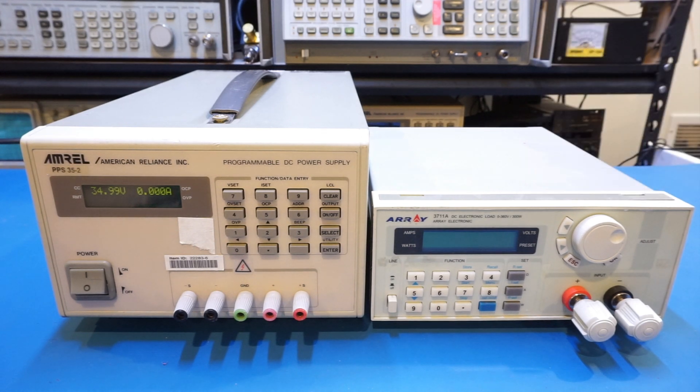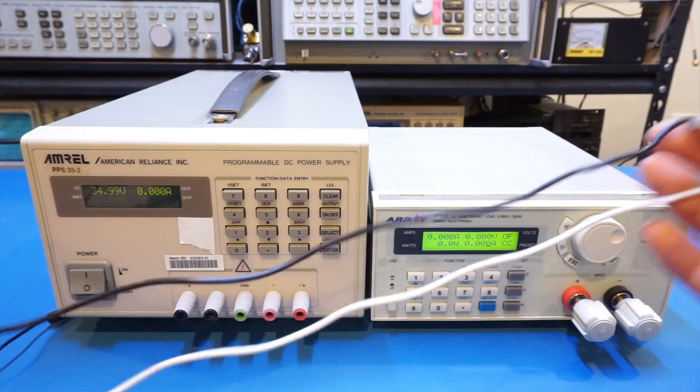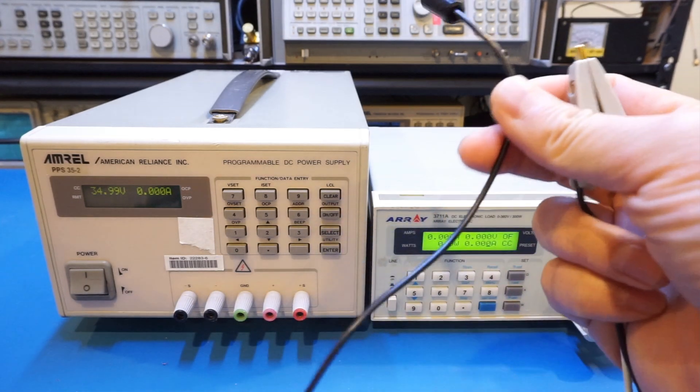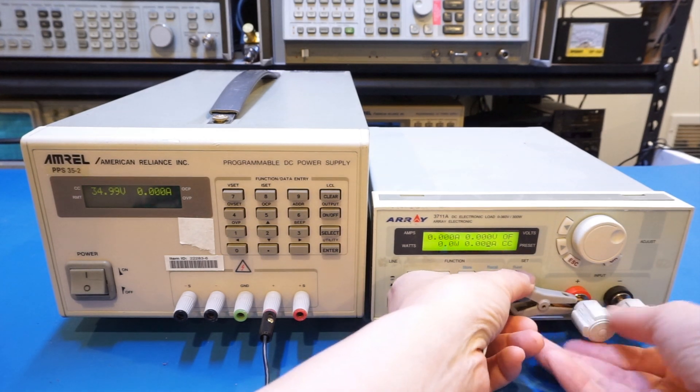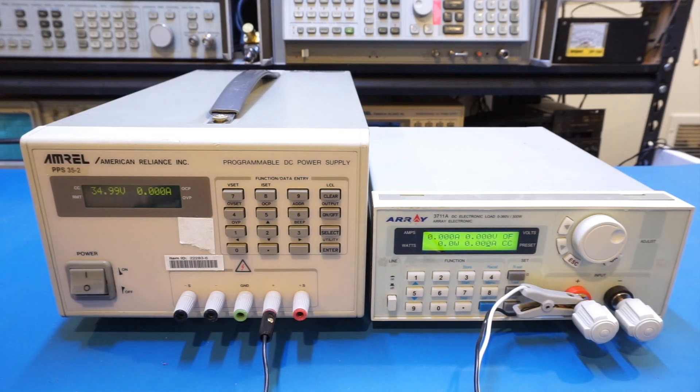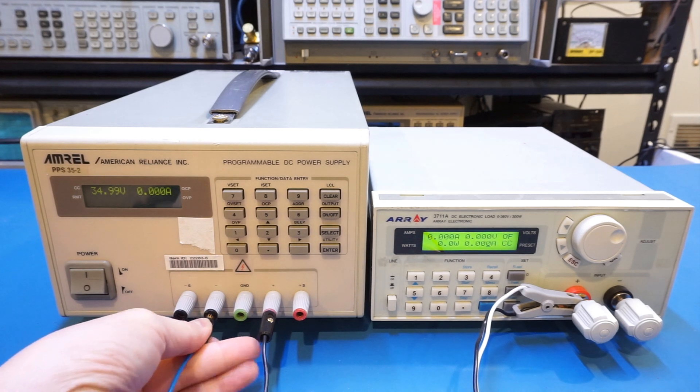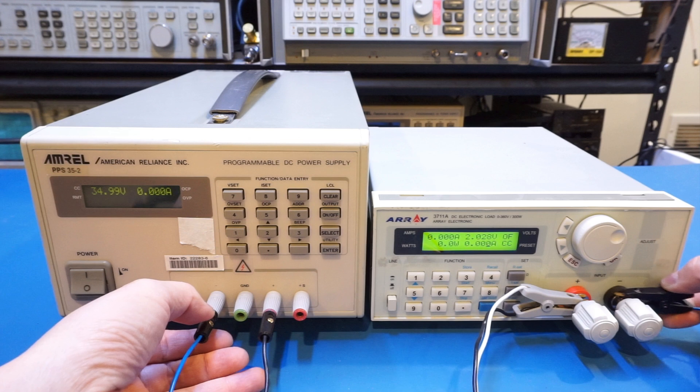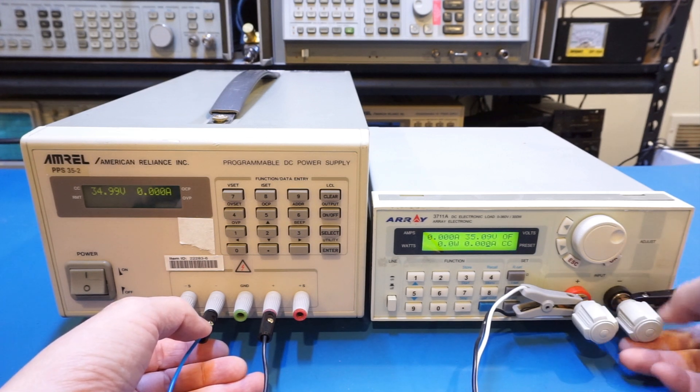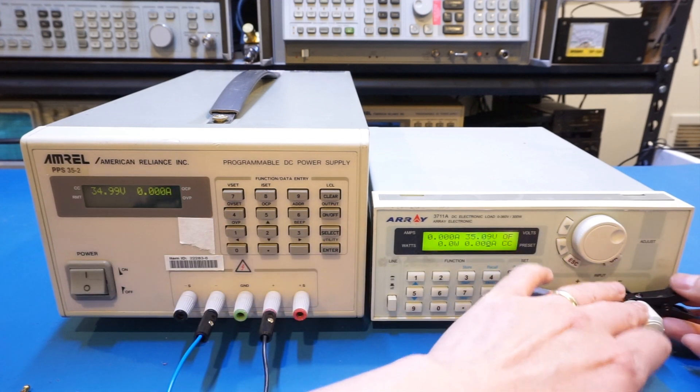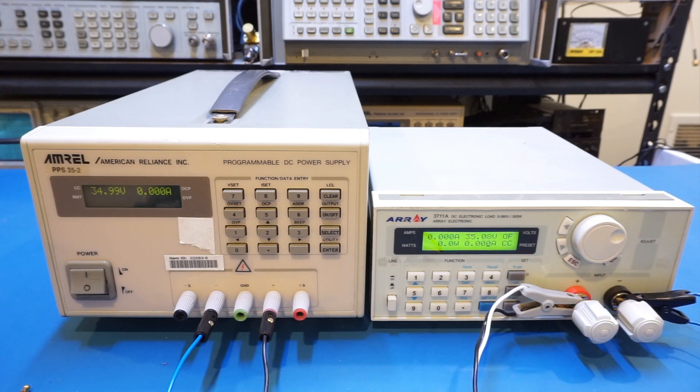Right now I'm going to turn on the electronic load and connect the power supply to it. I'm using this Kelvin sensing clip. The reason for that is later on we're going to be testing the sensing terminal, so right now I'm only going to use one lead here. This is positive and it connects to positive, and for the negative we're going to again use only one lead. Now you can see that we are sensing 35.08 volts at the terminal here.